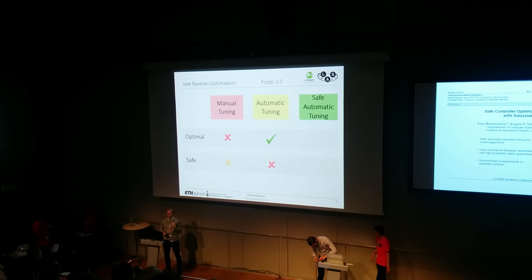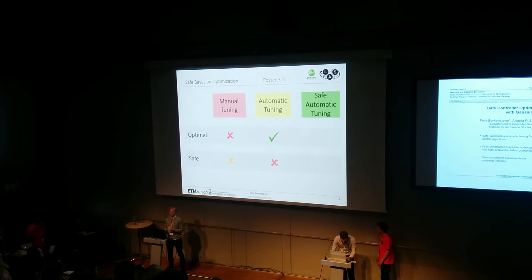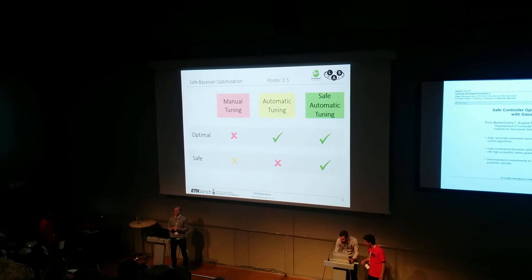The resulting algorithm on the one hand retains the optimality guarantees of standard Bayesian optimization, but on the other hand only tries parameters that are safe with high probability.